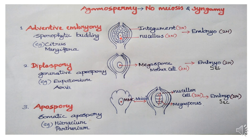In the megasporangium, inside the ovule, the megaspore mother cell is present at the center. It is surrounded by nucellus cells — mostly parenchyma tissue. The nucellus is surrounded by two coverings: two layers, the outer and inner integuments. The embryo develops from the nucellus or integument tissue. That is the adventive embryo.